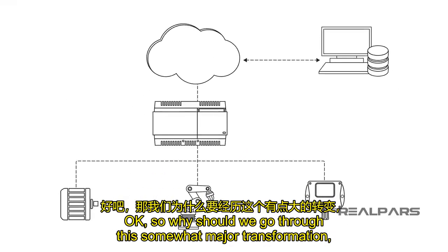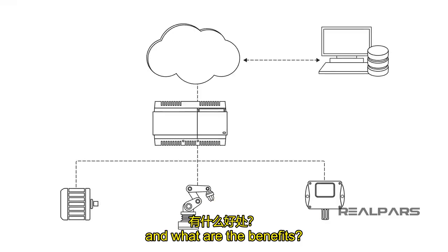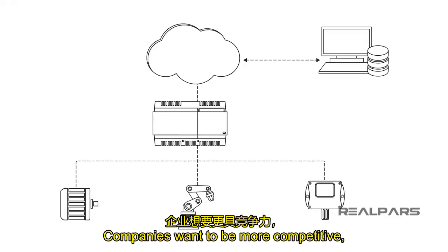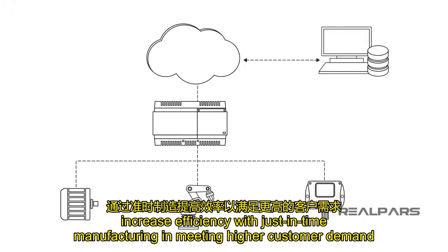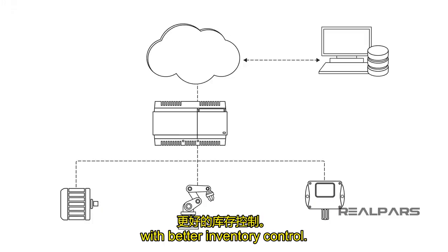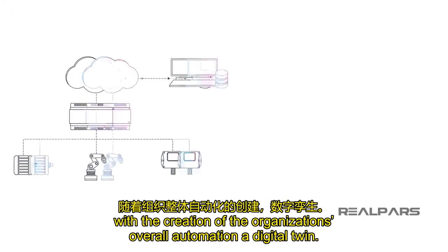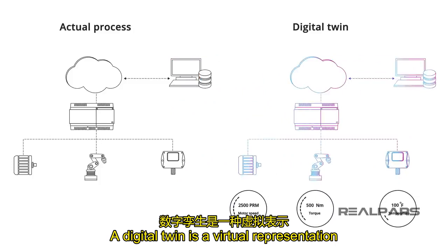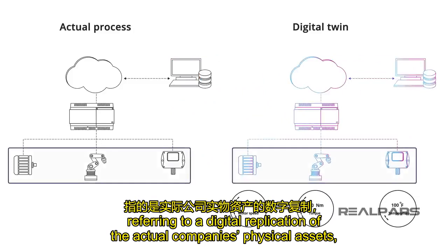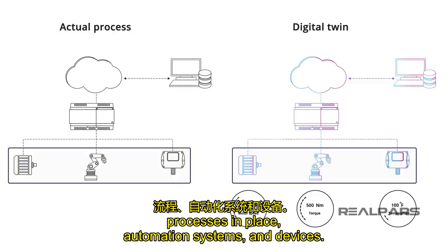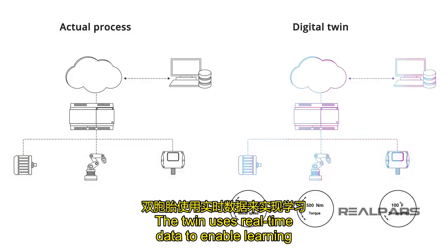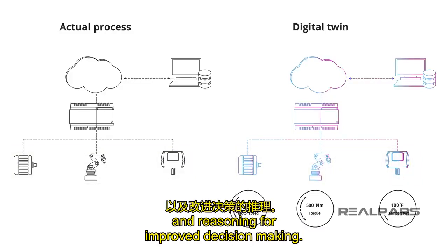So why should we go through this somewhat major transformation, and what are the benefits? Companies want to be more competitive, increase efficiency with just-in-time manufacturing, and meet higher customer demand with better inventory control. We can do all of this with the creation of the organization's overall automation — a digital twin. A digital twin is a virtual representation referring to a digital replication of the actual company's physical assets, processes in place, automation systems, and devices. The twin uses real-time data to enable learning and reasoning for improved decision-making.